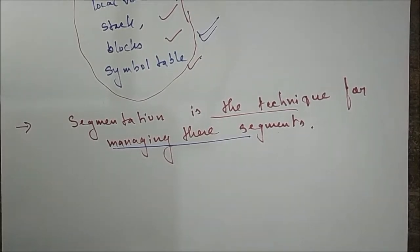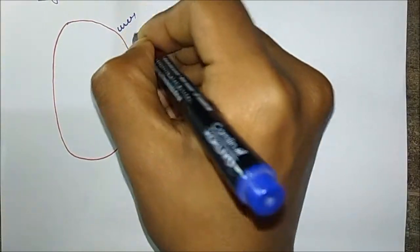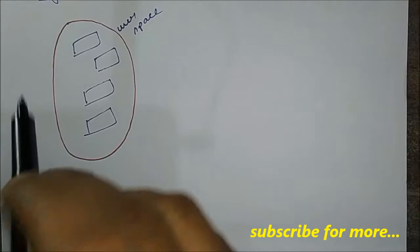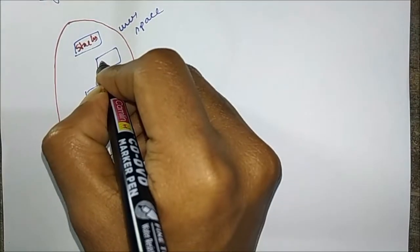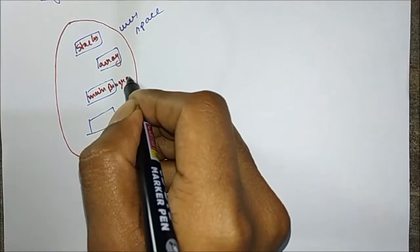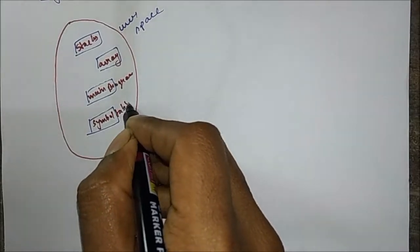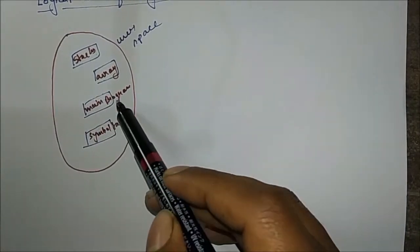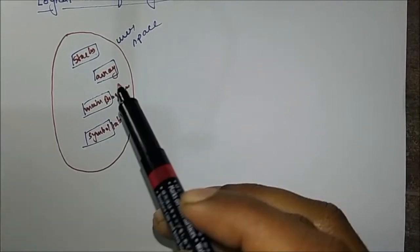Now I'll show you the logical view of segmentation. This is the user space. In this user space, all of these are segments. I have drawn four segments here: stack, array, main program, and symbol table. These are all segments stored in user space, and each segment is distinct — stack is one segment, array is one segment, main program is one segment, and symbol table is one segment.